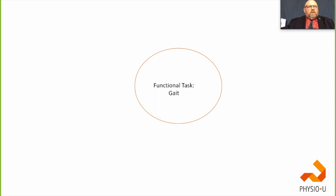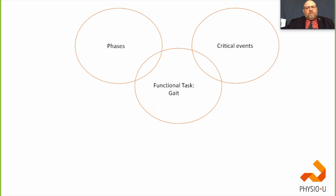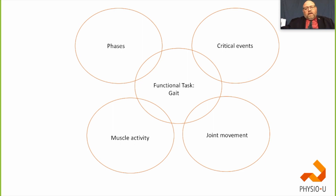Another challenge is standardization of patient examples. We have the objective phases, the critical events, the muscle activity, and joint movement. Replace the word 'gait' with 'sit to stand' or 'getting up from a chair,' and that can really help us not reinvent the wheel — just tighten the spokes for different functional activities.